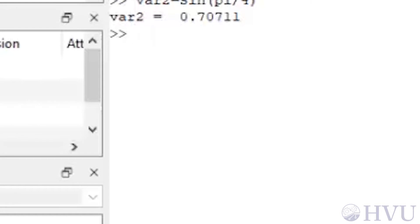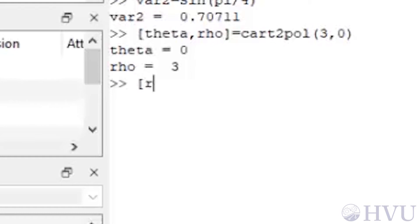First, I'll just type the command as it was on the previous slide. So [θ, ρ] = cart2pol(3, 0). This returns θ = 0 and ρ = 3 as we expected. Let's modify this a little bit though and type [ρ, θ] = cart2pol(3, 0). Now θ = 3 and ρ = 0.